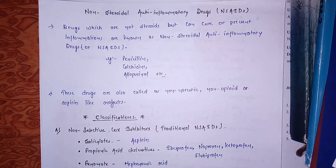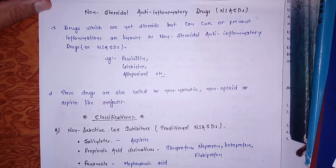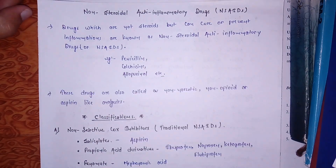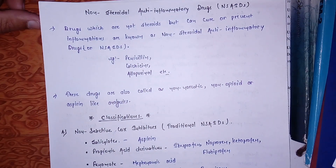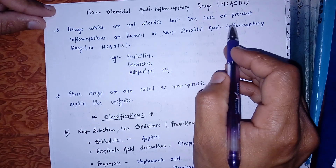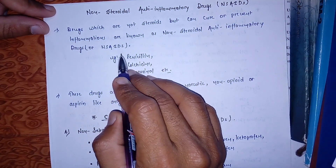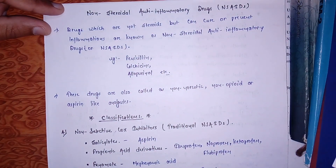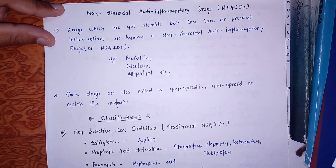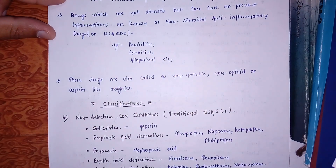Hello friends, here we are talking about NSAIDs, that is non-steroidal anti-inflammatory drugs. These are the drugs which are not steroids but can cure or prevent inflammation, and thus they are known as non-steroidal anti-inflammatory drugs. Some common examples include colchicine, allopurinol, etc. These are also called non-narcotic, non-opioid, or aspirin-like analgesics.